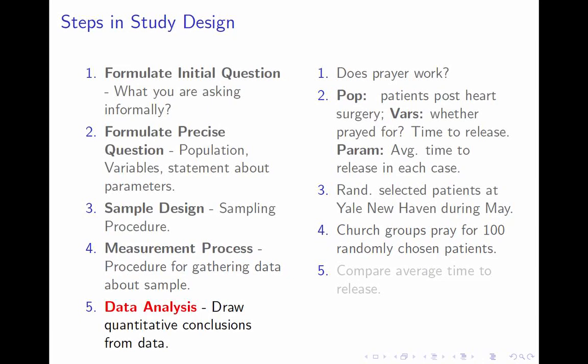Finally, the last step: once you have your data and know your question, you do the actual quantitative analysis and draw conclusions. In some sense this is what we'll spend most of the rest of the course on. In this case it's straightforward: we look at the average time to release of people who got prayed for versus those who didn't. If the first is a lot smaller than the second, prayer works. The only complicated aspect is distinguishing random variation from variation due to the underlying effect — that's inferential statistics, which we'll learn later. The first four steps all introduce problems in their own way.